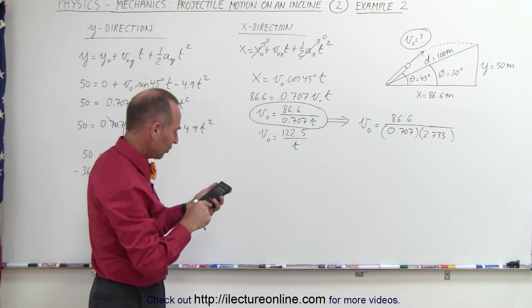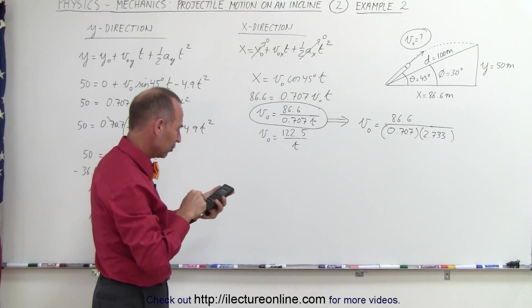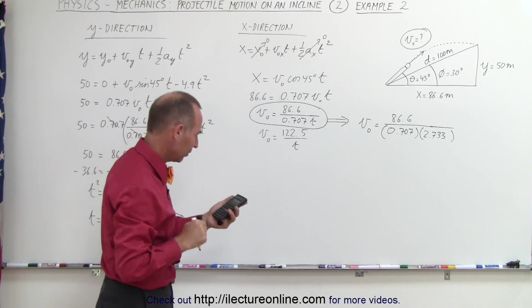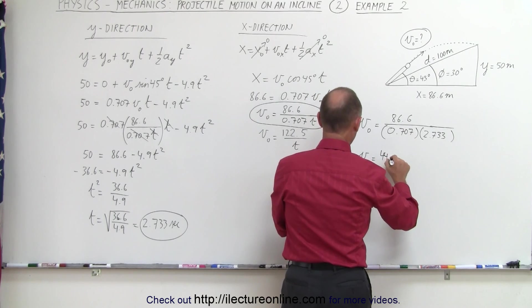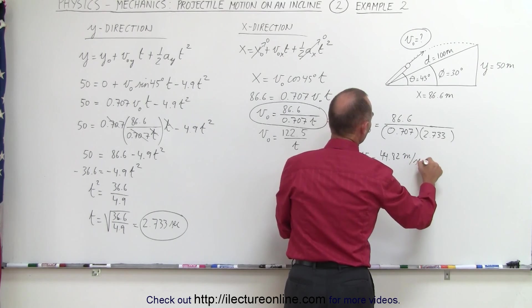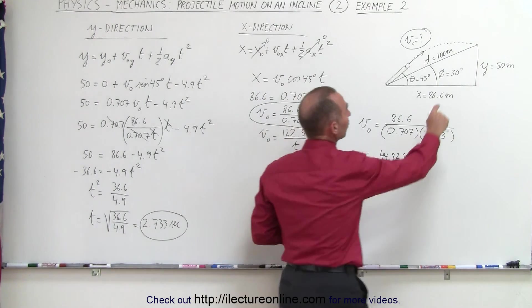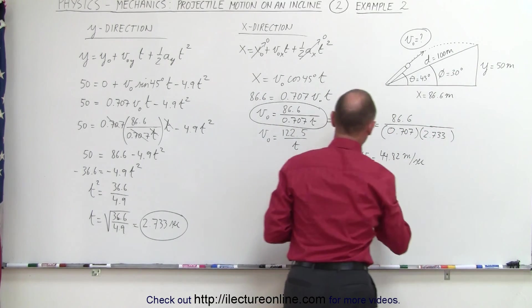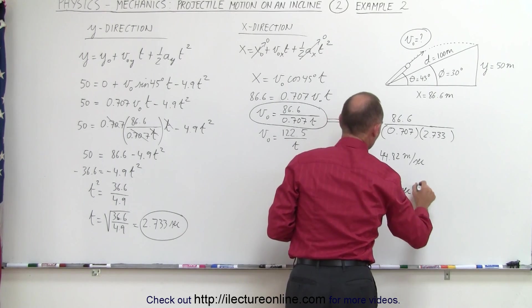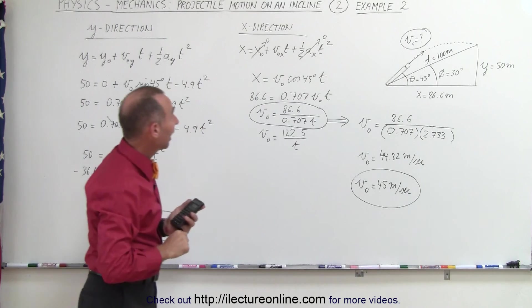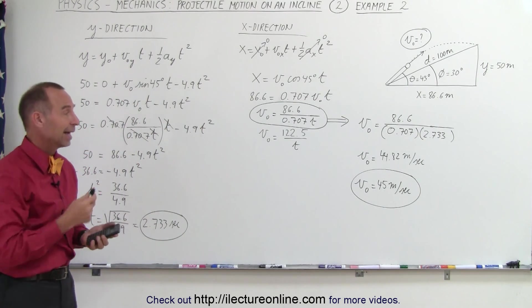Simplify that and we have v initial equals 44.82 meters per second. Realizing that the information was given in two or three significant figures, we can say that v initial equals 45 meters per second. And that's how we find the initial velocity of projectile motion on an incline.